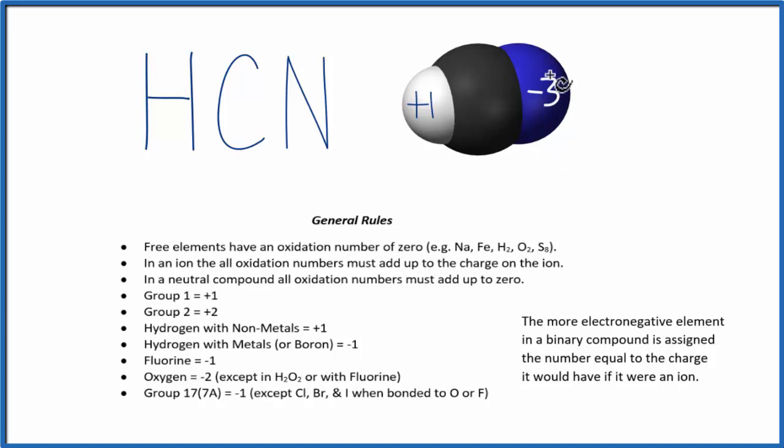Based on that information, we know neutral compounds, this is neutral with no plus or minus charge written, will have oxidation numbers that add up to zero. So minus three and plus one gives us minus two. For this all to be zero,